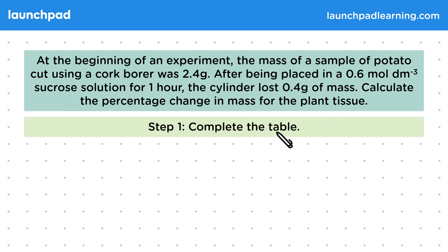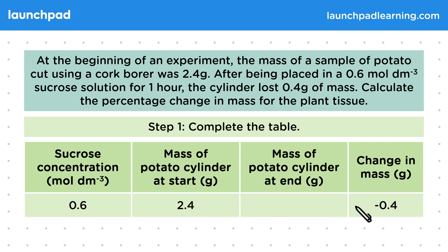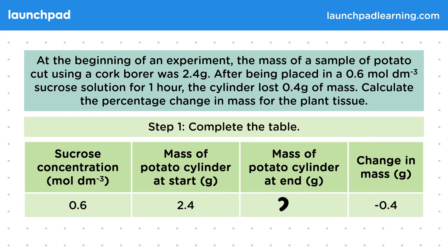Step one is to complete the table. In this column we have the sucrose concentration, which is 0.6 moles per decimetre cubed. The mass of the potato cylinder at the start was 2.4 grams — this was provided in the question. This column is blank; this is what we need to work out. We know that the change in mass was minus 0.4 grams, so the final mass was 0.4 grams less than at the beginning. To find the mass at the end, we do 2.4 minus 0.4, which equals 2.